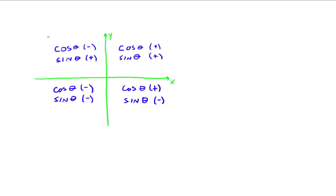But if we're over here in quadrant 2, with an angle going out like this, the x value is negative, so the cosine value of that angle is going to be a negative number. The y value is positive, so the sine value is still positive. So for any angle between 90 and 180 degrees, or between π/2 and π radians, cosine is negative and sine is positive.